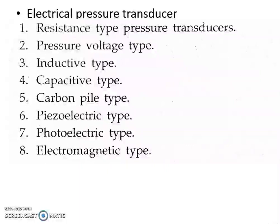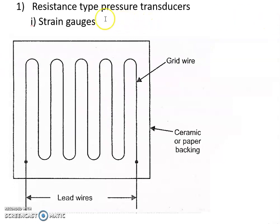We are going to study the different types of electrical pressure transducers in detail. The first one is resistance type pressure transducers. In this case, the quantity pressure is measured in terms of change in resistance. There are two types: one is strain gauge, and the other is moving contact type resistance transducer.